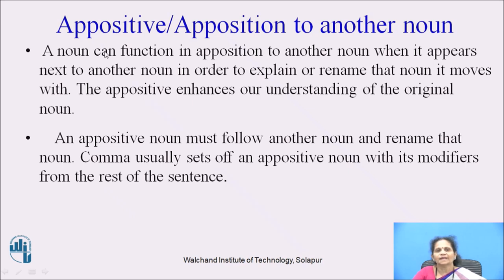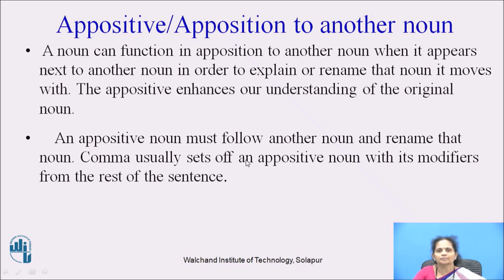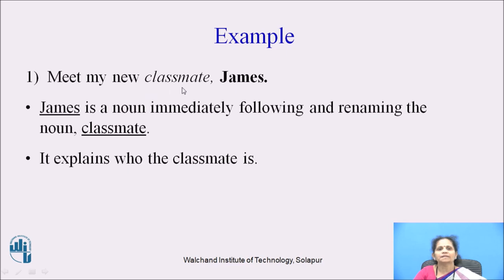Noun functioning as an appositive to another noun. A noun can function in apposition to another noun when it appears next to another noun in order to explain or rename that noun. The appositive enhances our understanding of the original noun. An appositive noun must follow another noun and rename that noun. A comma usually sets off an appositive noun with its modifiers from the rest of the sentence. The example is: Meet my new classmate, James. James is a noun immediately following and renaming the noun classmate — it explains who the classmate is.